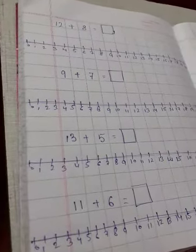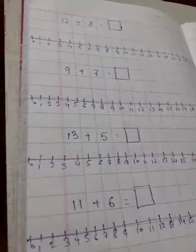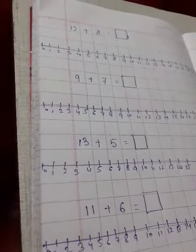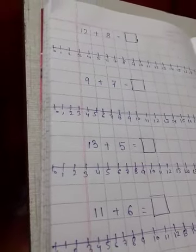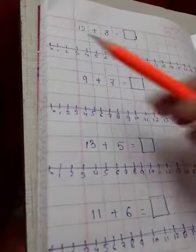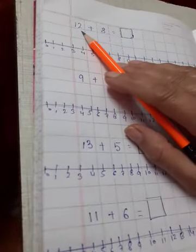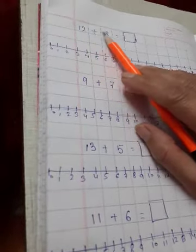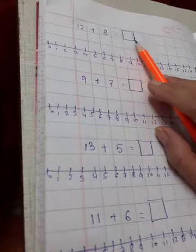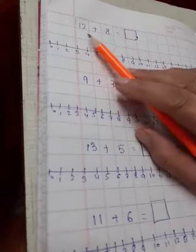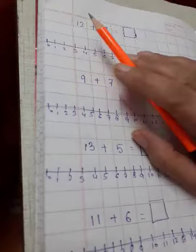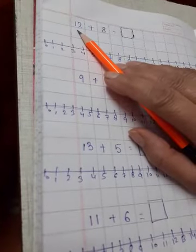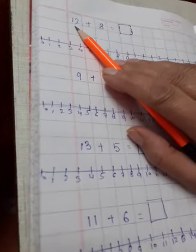Okay, first what you have to do, you have to first read the sum and after reading the sum we will do the sum. So, first we will read 12 plus 8 equal to box. So, in this sum, after reading the sum you have to go to the first number and this is number 12.